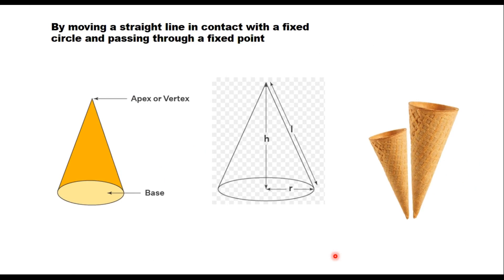A cone is obtained by moving a straight line (the slant face) in contact with a fixed circle (the base) and passing through a fixed point called the vertex or apex. Equivalently, a right-angle triangle revolved around its long edge forms a cone. The radius of the base, the height, and the slant height L define the cone. The line joining the apex with the center of the base is called the axis of the solid.